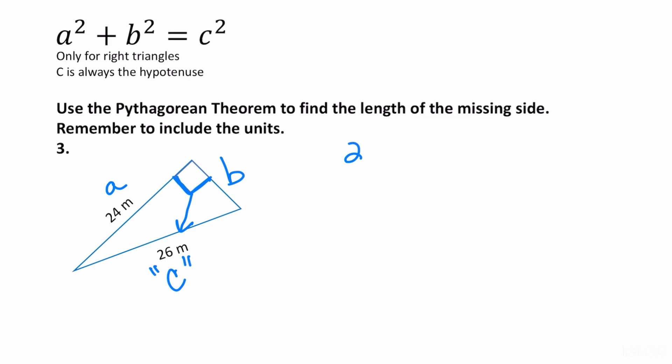So A squared, 24 squared, plus B squared, which we don't know. You can use B. You can use X for an unknown. Doesn't matter. It's just a variable. It's equal to 26 squared. You might not know what 24 squared is, so you might have to use a calculator. But 24 times 24 is 576 plus B squared, and 26 times 26 is 676.